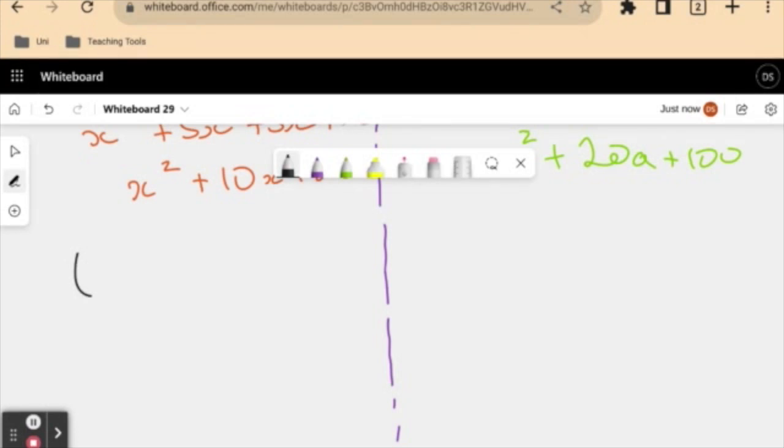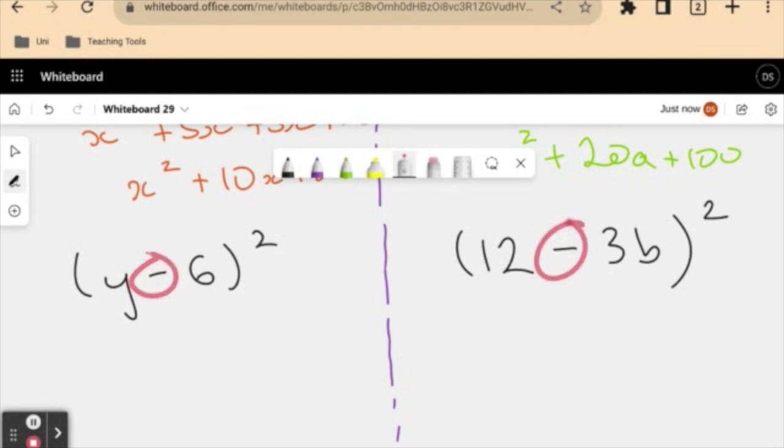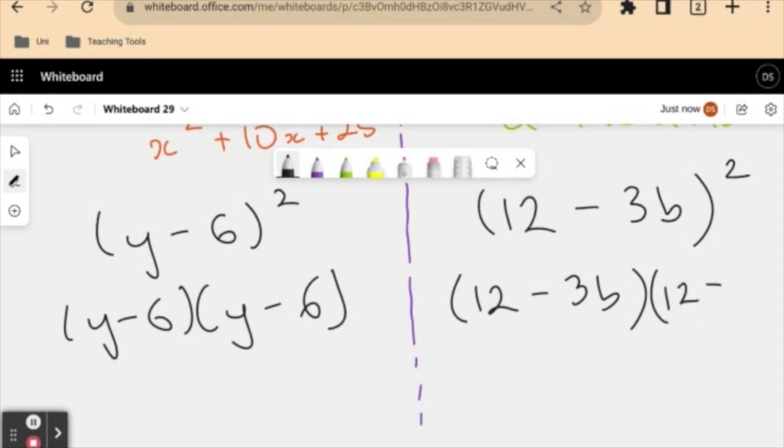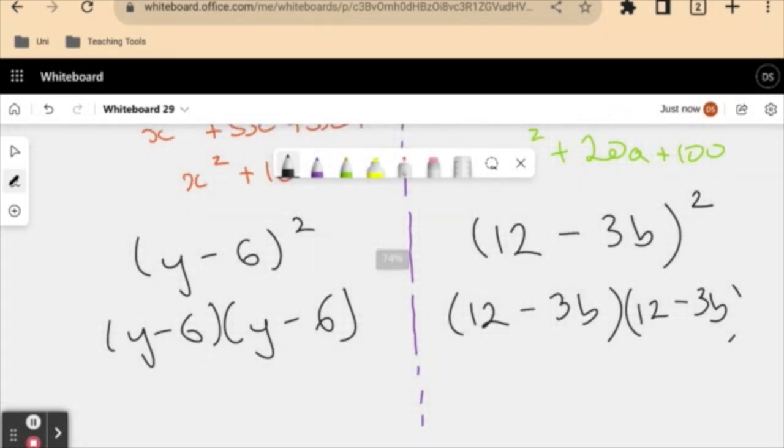So another example I'm going to give you is y minus 6 squared. And my other example is 12 minus 3b squared. Another two perfect squares. This time we have a negative here. And I've also flipped over the order - I've put my whole number here and my algebraic term here. So just trying a couple of different things, seeing if it yields similar results. Once again, feel free to pause this if you'd like and give it a go on your own, but I'm going to do it here. I'm going to rewrite this out as a binomial product.